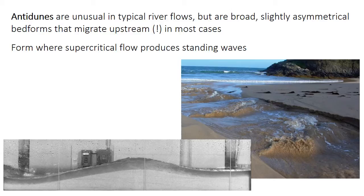The final unidirectional bedform is the anti-dune. It's an unusual bedform, at least in typical river flows, because it requires something called supercritical flow. Because it requires supercritical flow, the anti-dune might be reworked into different bedforms when the water stops being supercritical. An anti-dune is a broad and slightly asymmetrical bedform, as shown in the lower left photo. They actually migrate upstream in most cases, which is unusual compared to ripples and dunes, both of which migrate downstream. The picture on the right shows the standing waves above where the anti-dune is located.